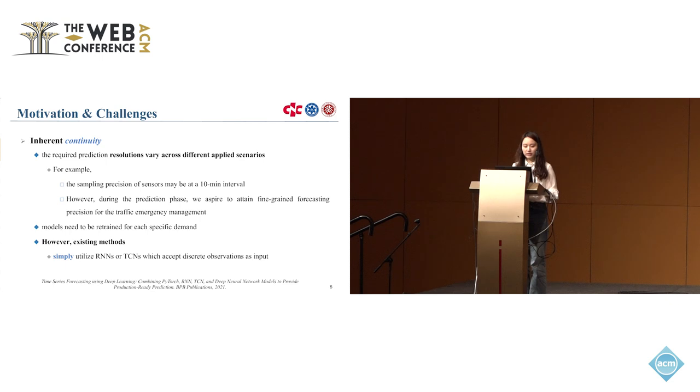Next, we introduce our second motivation, the inherent continuity. The required prediction resolutions may vary across different applied scenarios. For example, the sampling precision of traffic sensors may be at a 10-minute interval. However, during the prediction phase, we aspire to attain fine-grained forecasting precision for traffic emergency management. At this time, models need to be retrained for each specific demand. However, existing methods simply utilize RNNs or TCNs, which accept discrete observations as input.